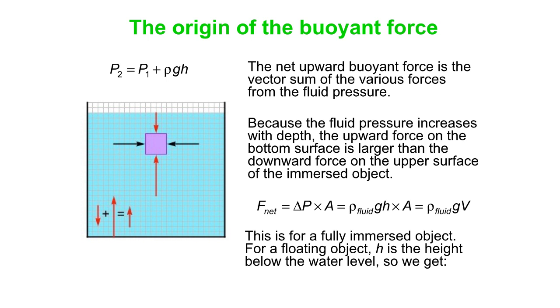Now if you've got a floating object, then h is simply the height below the water level. And so instead of the full volume of the cube as we get for this picture, you would get the volume of fluid displaced by the object instead. And that, of course, is Archimedes' principle. That's the buoyant force. So this is where the buoyant force comes from. Just the vector sum of all the pressure times area forces acting on an object in a fluid. All right, so that is our introduction to pressure, and we looked at how it's connected to the buoyant force.